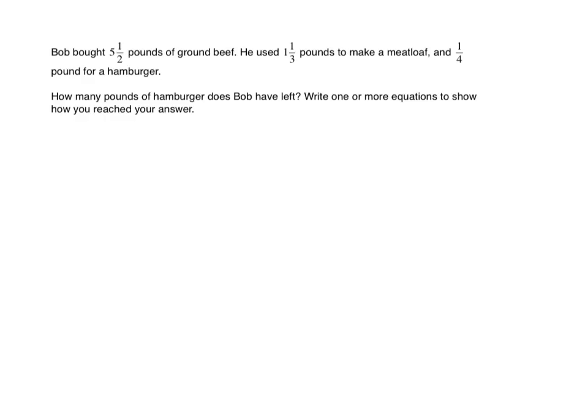This is a very common sort of problem. We've done many of these over several lessons, so this one should not be too difficult. Let's read it. Bob bought five and a half pounds of ground beef. He used one and one-third pounds to make meatloaf and one-fourth of a pound to make a hamburger. How many pounds of ground beef does Bob have left? Write one or more equations to show how you reached your answer.